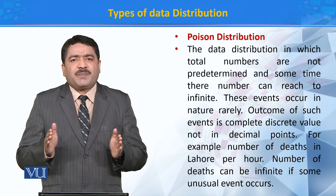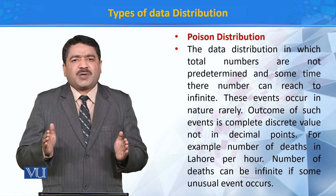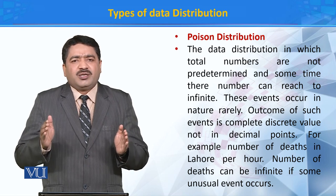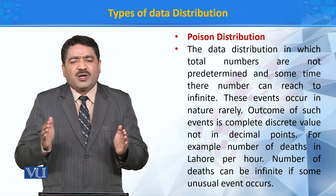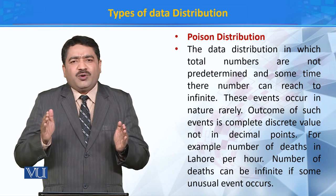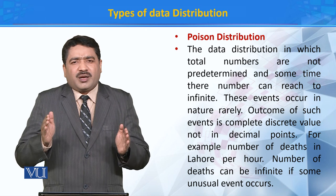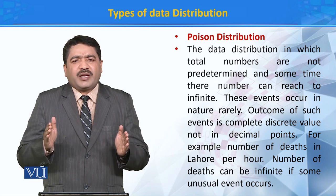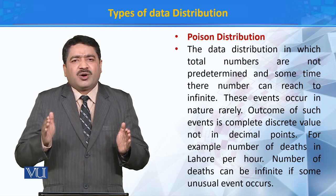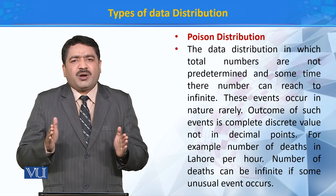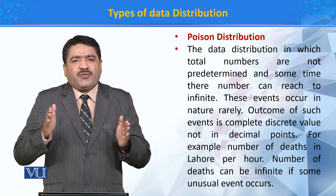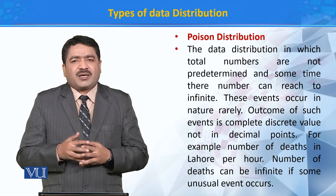تو تین کسم کی data distribution ہے: پہلی normal distribution جو کہ normal bell shape curve کو follow کرتی ہے، اسمیں extreme values بہت کم ہوتی ہیں اور individual values کا mean سے difference کم ہوتا ہے. دوسری binomial distribution، جس کے اندر number of events پہلے سے predetermined ہوتے ہیں لیکن ہر event کا outcome independent ہوتا ہے. تیسری Poisson distribution، جس میں number of events predetermined نہیں ہوتے لیکن sometime انکی تعداد بہت زیادہ بڑھ سکتی ہے اور ایک unlimited number میں convert ہو سکتے ہیں.